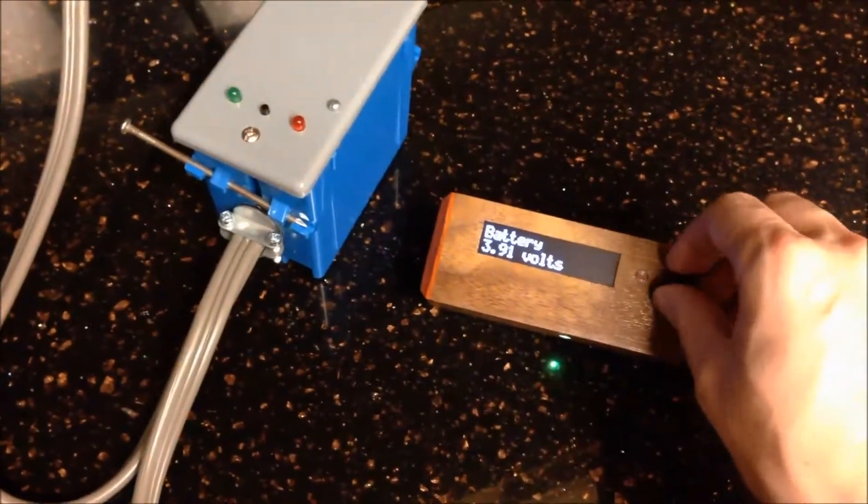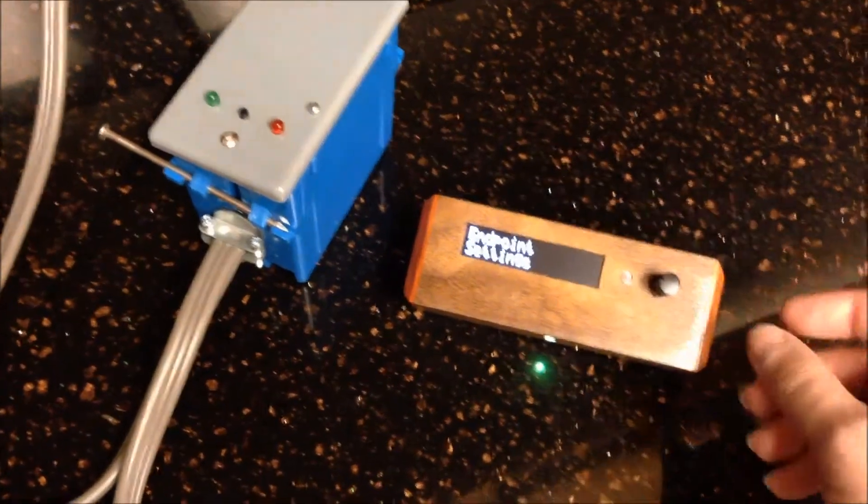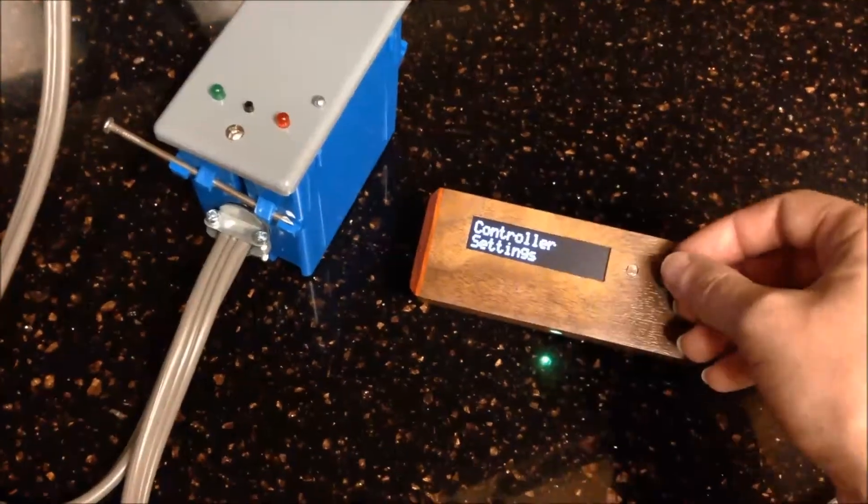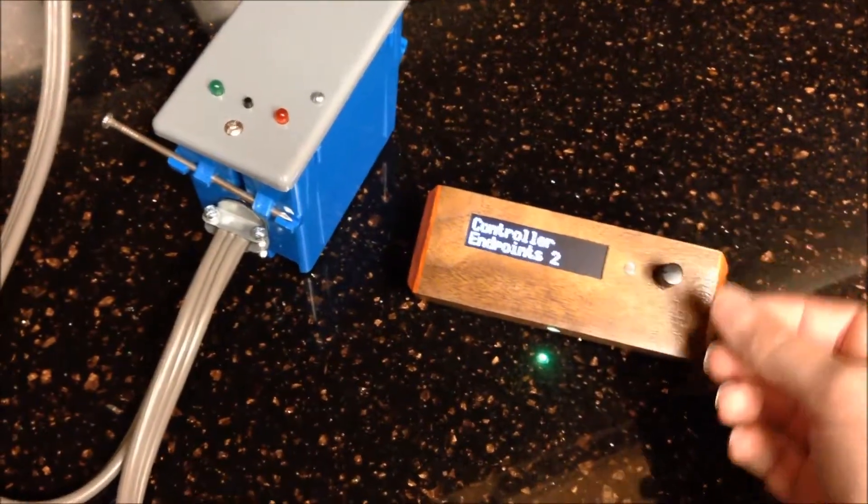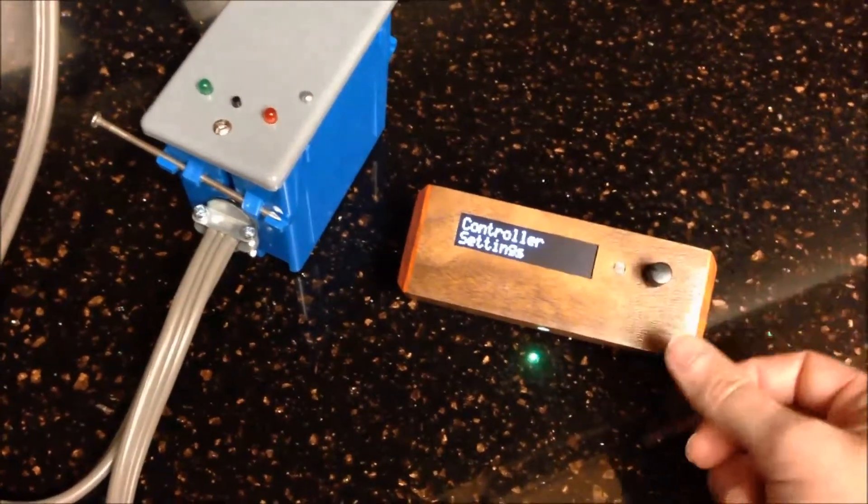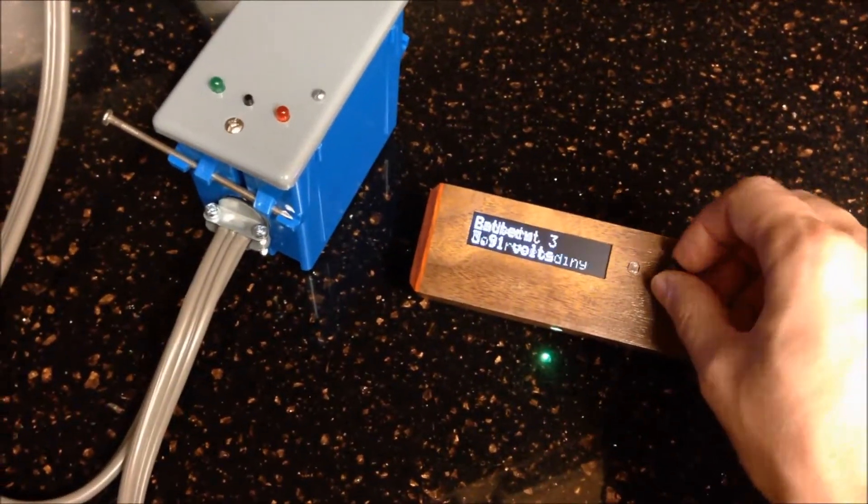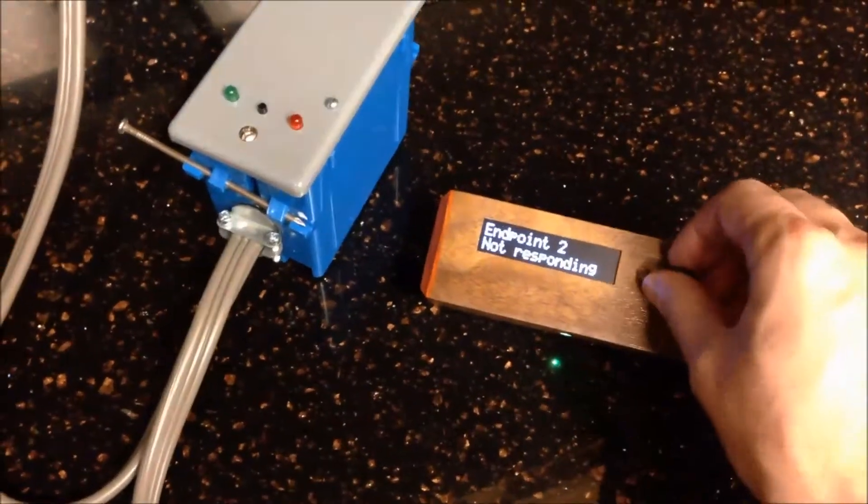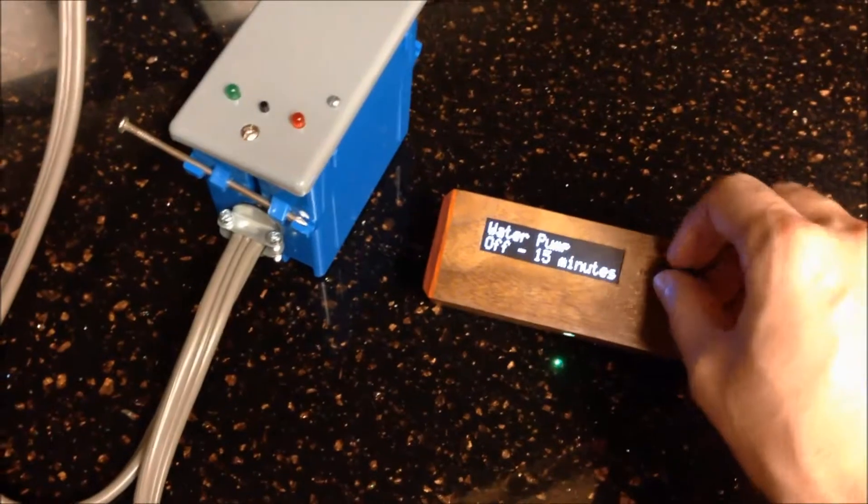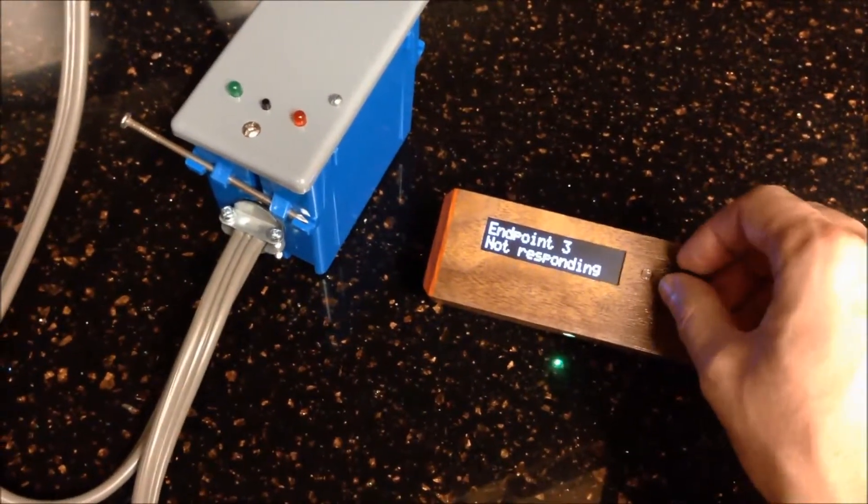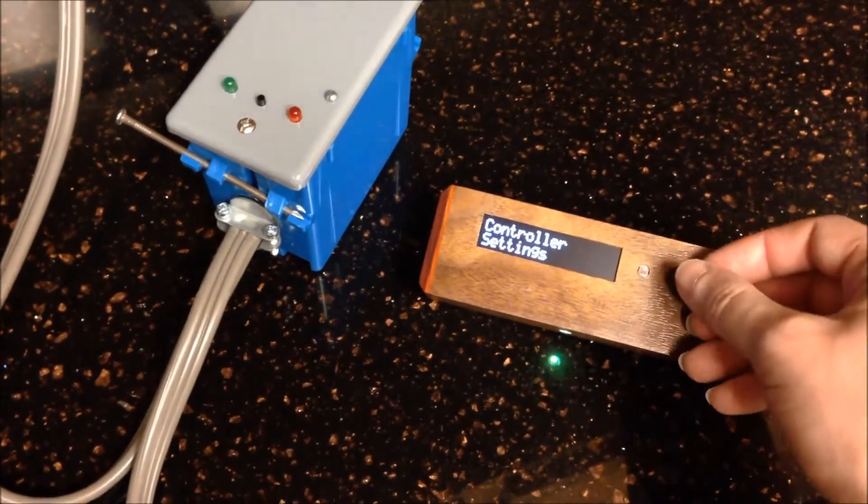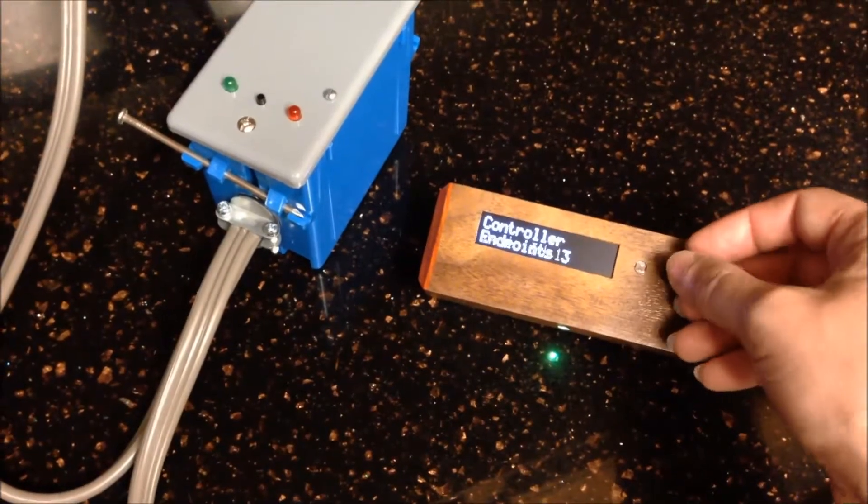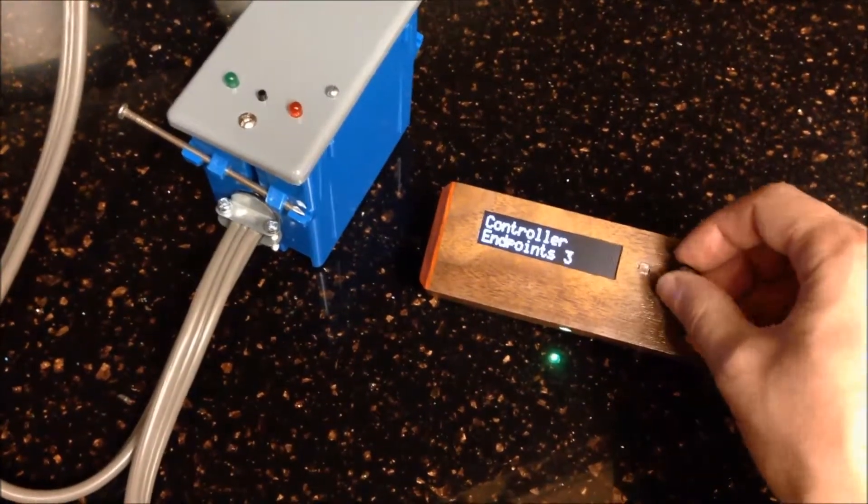If I go back in the controller and I change it to be three, you'll see that we now if we go back to the left we've got endpoint number three and number two and then the first one. So that's how I came up with being able to add and remove endpoints.